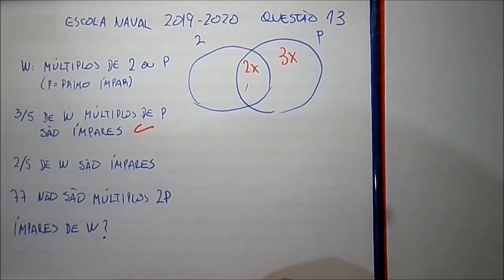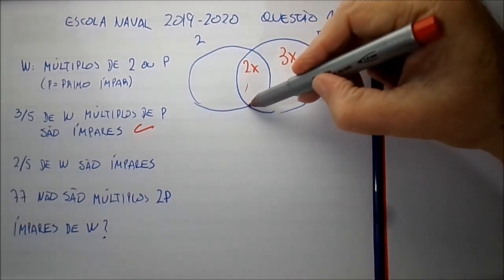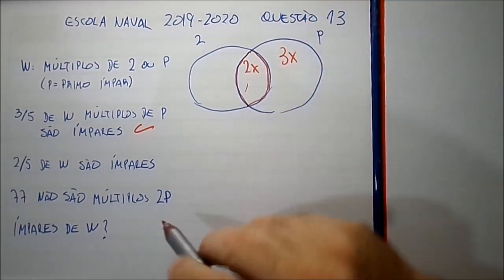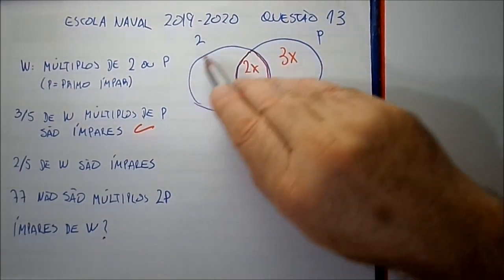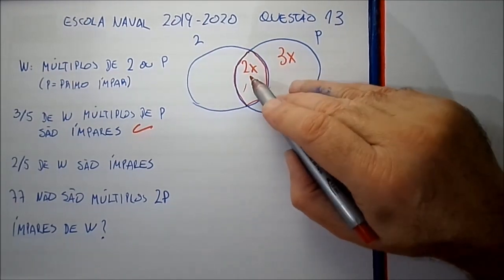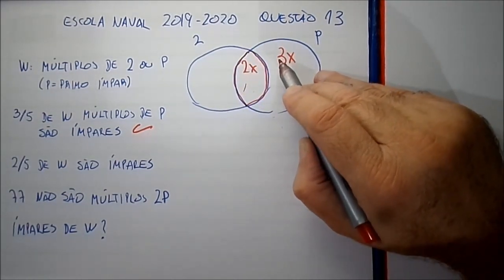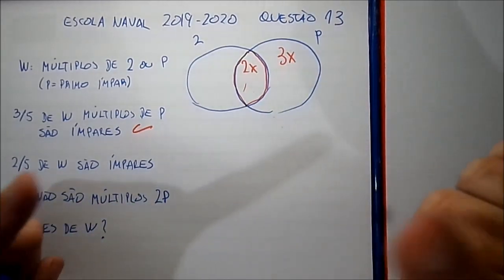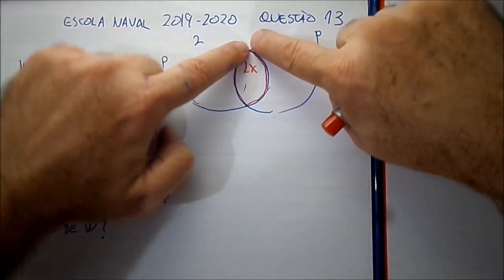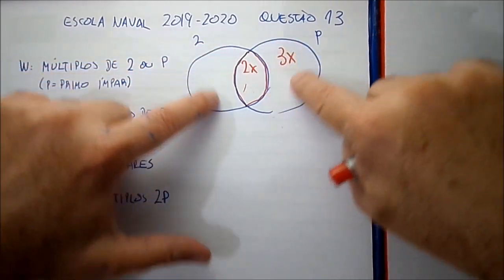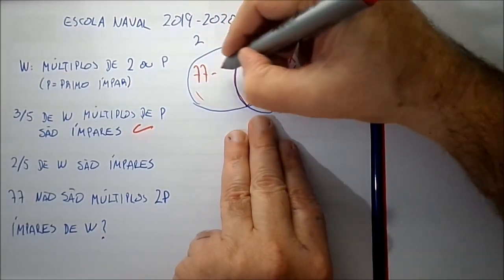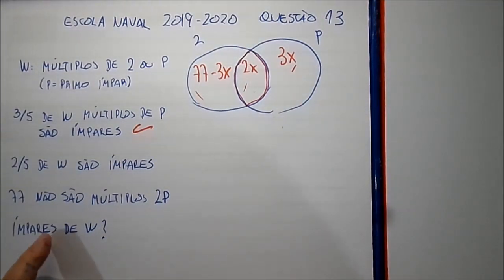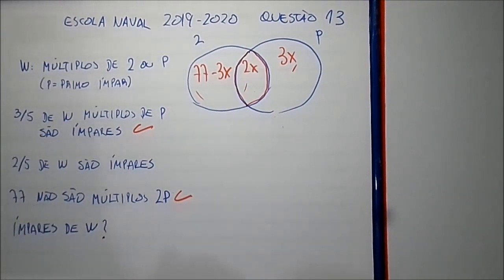Quem daqui não é múltiplo de 2P? Os múltiplos de 2P estão na interseção — eles são múltiplos de 2 e de P ao mesmo tempo. Então ele falou que 77 não são múltiplos de 2P, ou seja, esses dois grupos de fora da interseção somam 77. Você tem 77 nesses dois juntos. Se você tem 77 lá e aqui 3x, essa parte vale 77 menos 3x. Já usamos a condição dos 77. A condição restante: 2 quintos dos elementos de W são os ímpares.